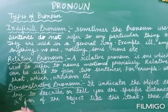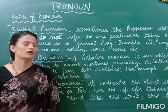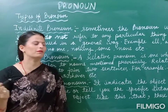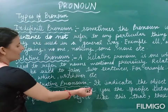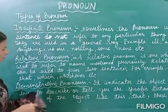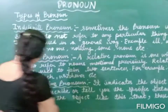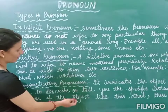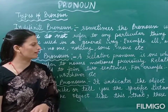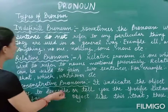The third type is demonstrative pronoun. A demonstrative pronoun is one used to indicate or point to a specific noun. It indicates the object and tries to describe or tell you the specific distance — near or far — of the object. When we point out the distance and try to locate and describe it, that is called a demonstrative pronoun.